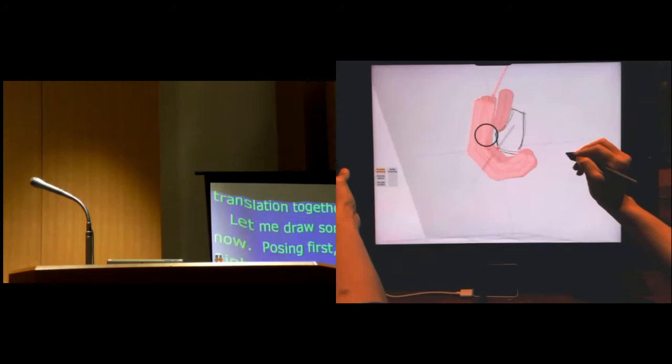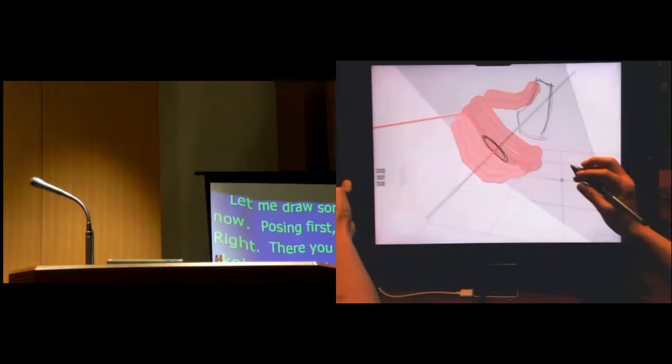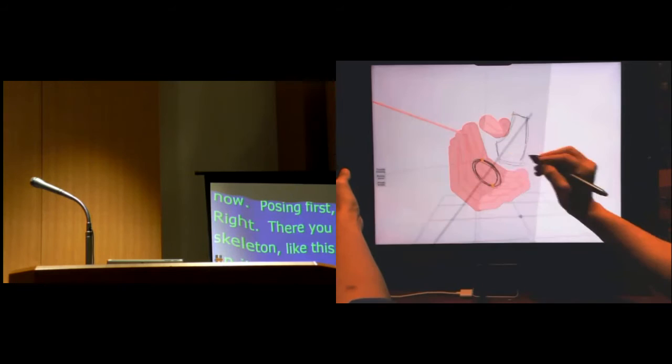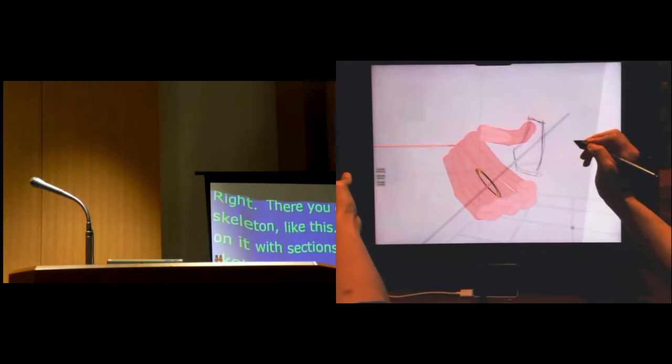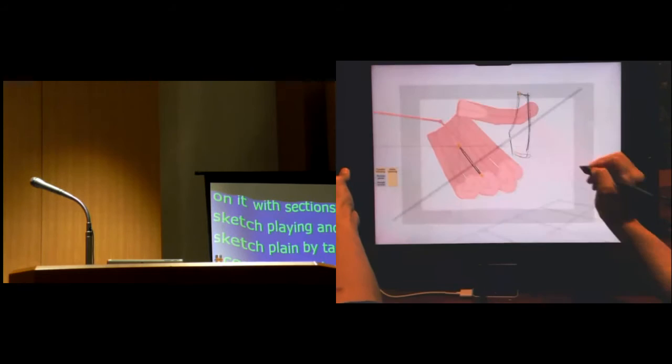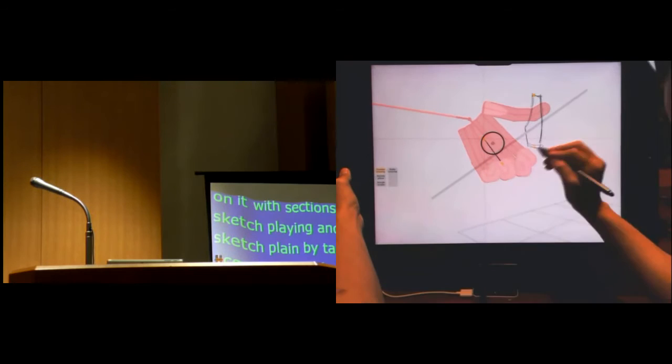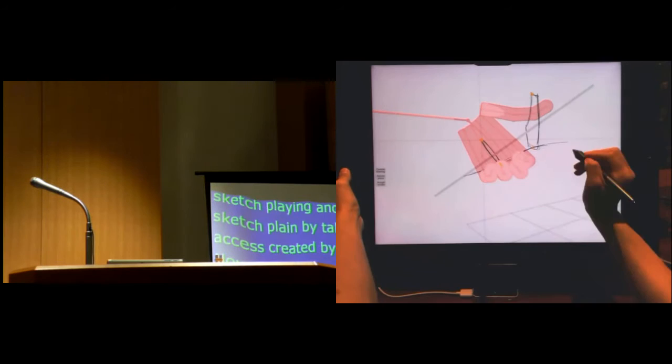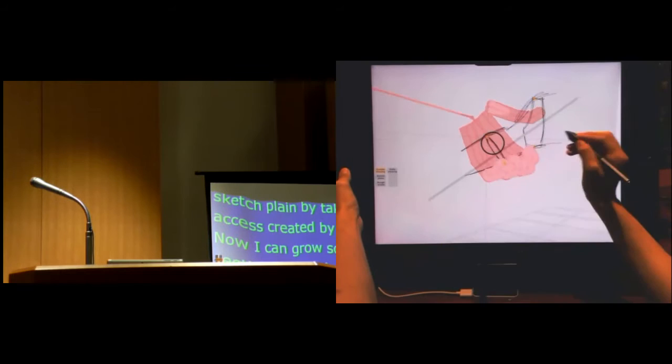Now I can draw some sections, section here. Okay? And also by ticking across the existing curves I can create a sketch plane. Now if the plane is not satisfactory I can rotate. So now I'll draw a nice side-view profile. Okay? I'm not sure what this will be. Okay. Let's try.